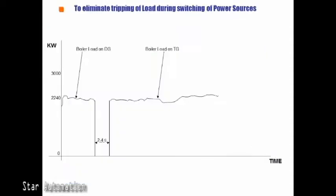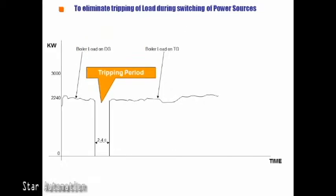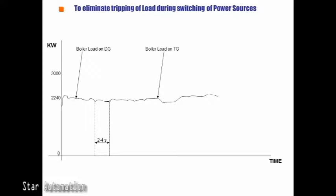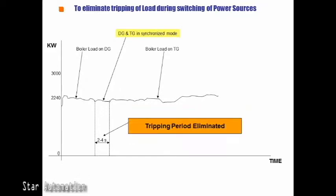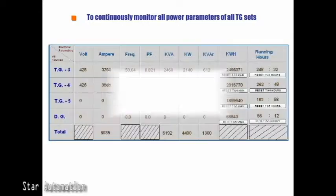In the sugar mill, the first boiler is started with the help of a diesel generator set. The boiler then generates steam which is used to start the TG set. When the TG set's voltage is built up, there is a need to shift the boiler's supply power from the DG set to the TG set. This is where DG and TG power synchronization is required, so that there is no tripping during power switchover.